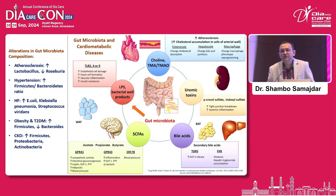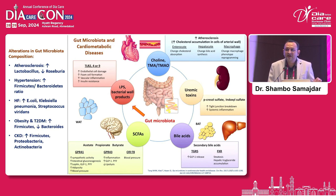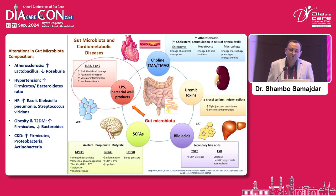When we talk about complications associated with Type 2 diabetes, a major one is cardiovascular disease, including atherosclerosis. Disruption in gut microbial composition can lead to this horizon of cardiometabolic disease. For example, elevated lipopolysaccharide levels cause endotoxemia, unnecessary upregulation of toll-like receptors, endothelial cell damage, foam cell formation, vascular inflammation, and insulin resistance — all contributing to atherosclerosis.